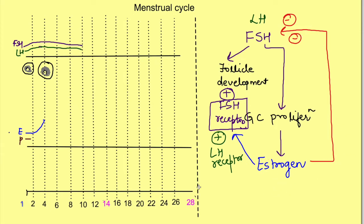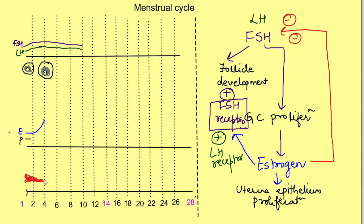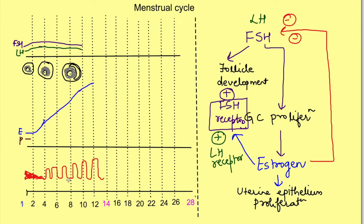Estrogen also has an effect on the uterine epithelium — it causes proliferation of the uterine epithelium. From day 1 to day 4 there is shedding of the uterine epithelium, but after that there is an increase in the thickness of the uterine epithelium. This is known as the proliferative phase, occurring due to the effect of estrogen on the uterine epithelium.